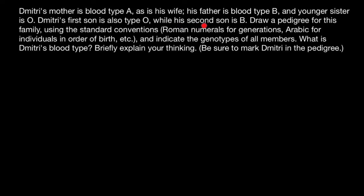His second son is blood type B. Draw the pedigree for this family using standard conventions: Roman numerals for generations, Arabic numerals for individuals in order of birth, and indicate the genotypes of all members. What is Dmitri's blood type? Briefly explain your thinking. Be sure to mark Dmitri in the pedigree.